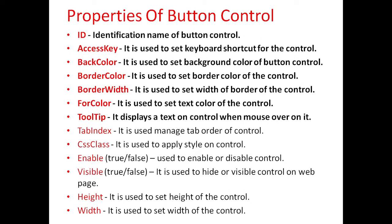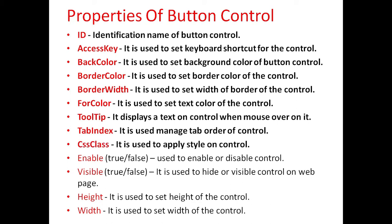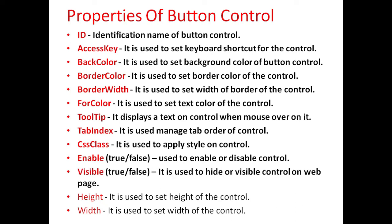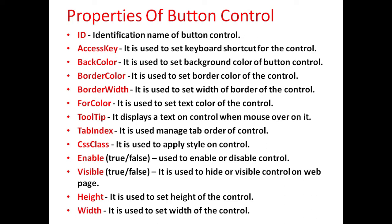Tooltip is used to display text on the control when the mouse is over it. TabIndex is used to manage the tab order of the control. CSSClass is used to apply style on the control. Enable property is used to set the enabled or disabled state of the control. Visible property is used to hide or show the control on the web page. Height is used to set the height of the control, and Width is used to set the width of the control.